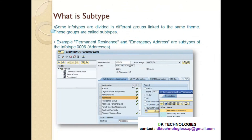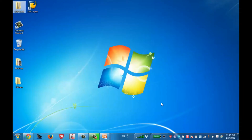Now what is a sub type? You know what an info type is, but there is a term called sub type — it is a division of an info type. Take the example of info type 6, which is the Address info type. This address info type can have a permanent address, an emergency address, or a home address — these become the sub types of the main info type Address. Not all info types will have sub types. Info type 6 and info type 105 (Communication) are examples of info types that have sub types.